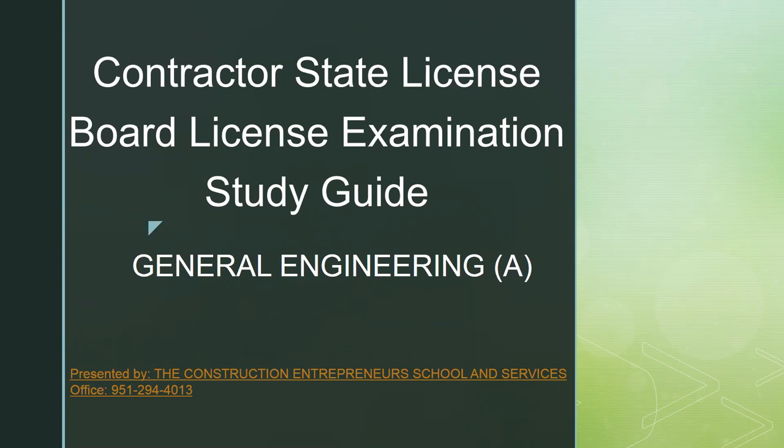The description for the General Engineering A license: a general engineering contractor is a contractor whose principal contracting business is in connection with fixed works requiring specialized engineering knowledge and skill, including the following divisions or subjects: irrigation, drainage, water power, water supply, flood control, inland waterways, harbors, docks, shipyards and ports, dams, hydroelectric projects, levees, river control, railroads, highways, streets and roads, tunnels, airports and airways, sewer, sewage disposal plants and systems, waste reduction plants, bridges, overpasses, underpasses, and other similar work.